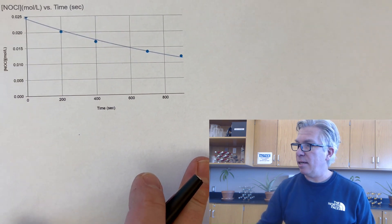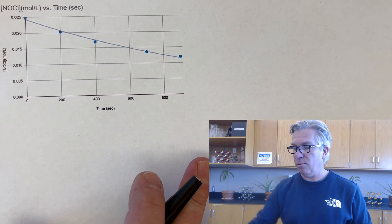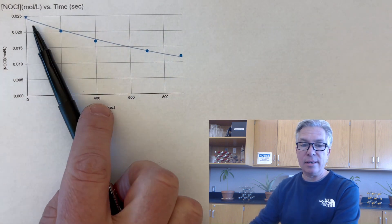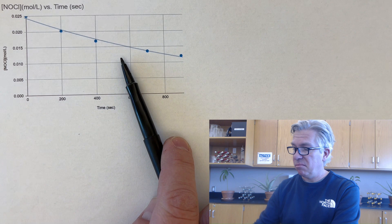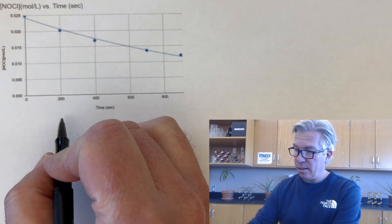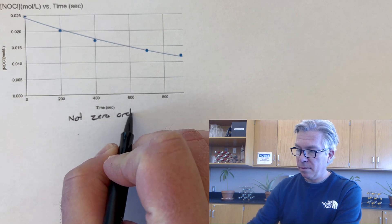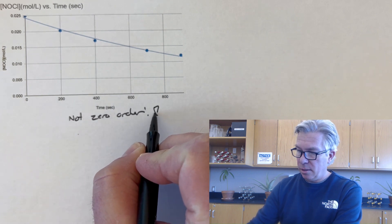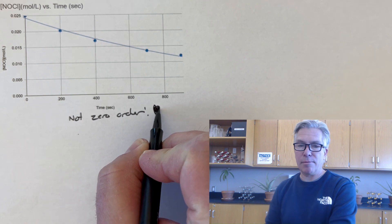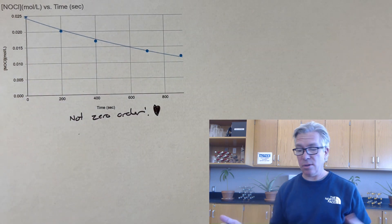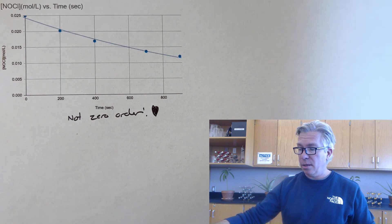First, I plotted NOCl versus time in moles per liter and in seconds. And I look at this graph and it is most certainly not linear. So, okay. So we can say nonlinear, that is not zero order. So it's telling me what it's not, but that's also good information to know that it's not zero order. It must be first or second, because that's all I'm going to be responsible for.